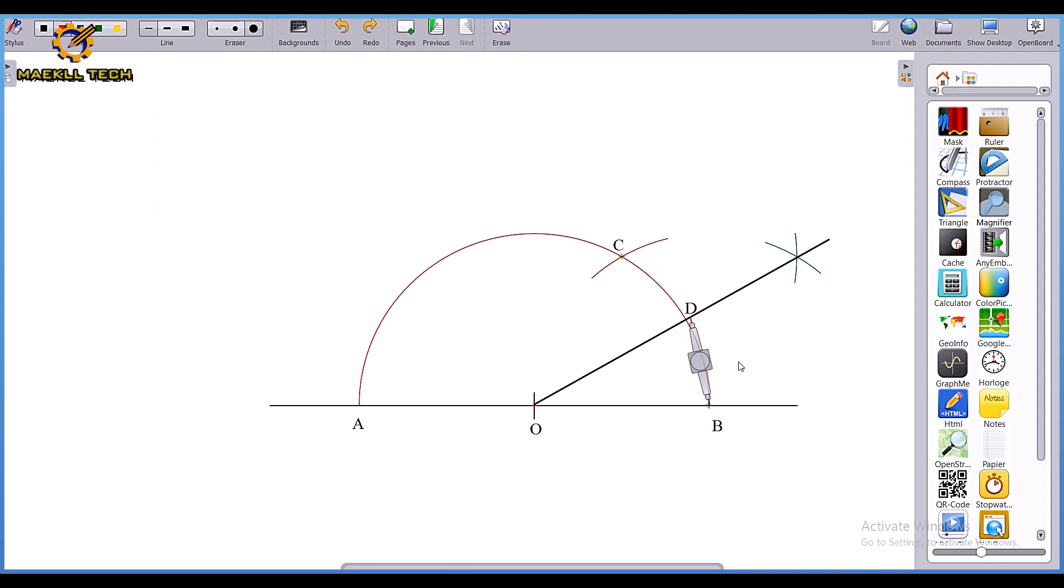Standing on mark B, I'm going to draw this bisector. Without adjusting my compass, ensure it doesn't shake. If it shakes, it spoils everything you've been doing. I won't shake the length of my compass. I'll just carry my compass to mark D right here and then draw the corresponding arc.